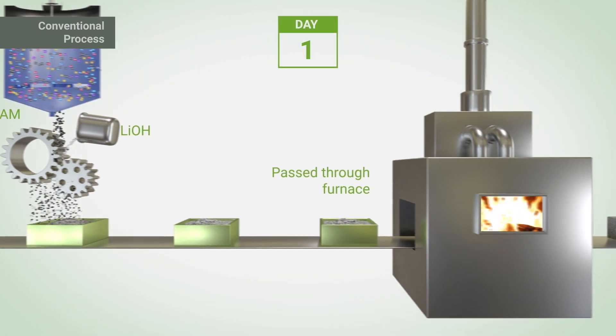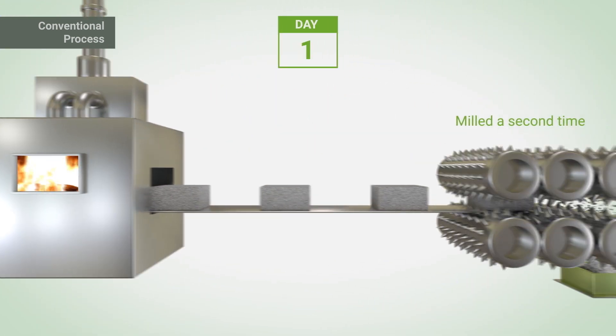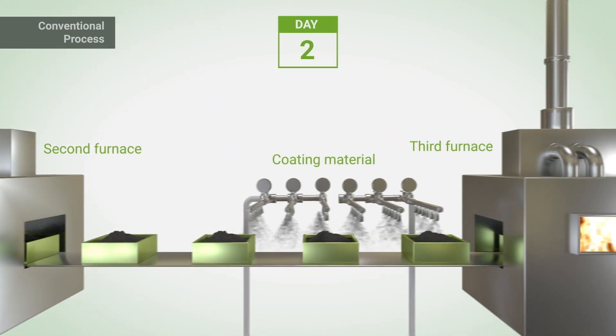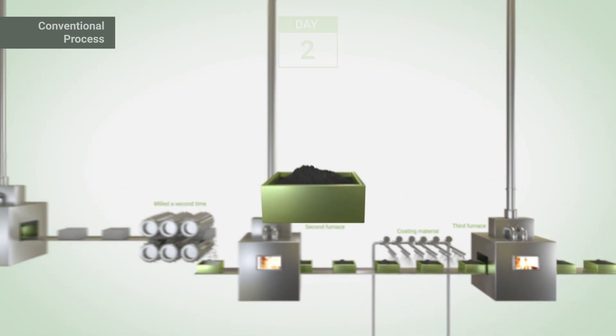PCAM is milled with lithium hydroxide and heated in a furnace over a period of days before protective coatings can be added to form the finished cathode powder.